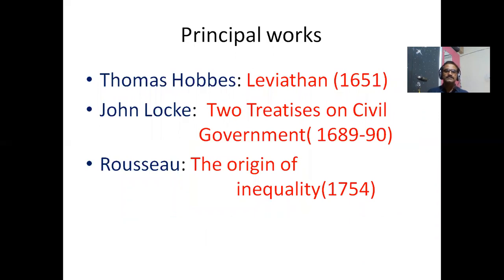The important works: Thomas Hobbes wrote Leviathan in 1651, when there was civil war in England and chaotic conditions prevailed, which influenced his work. John Locke wrote Two Treatises of Civil Government, written in 1689. Rousseau's work was The Origin of Inequality — we learned how inequality began with the emergence of family and private property.